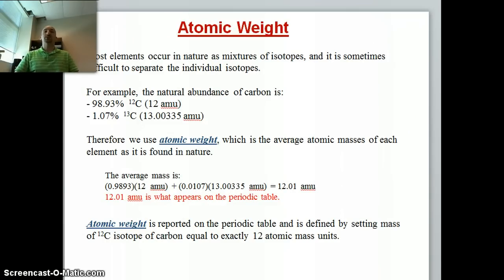Most elements that we encounter in nature exist as a mixture of isotopes. An example of this is carbon, which is 99% carbon 12 and about 1% carbon 13. The atomic weight is just the average atomic mass of each element in nature. For carbon, we can actually calculate this atomic weight using this equation where we know that 98.93% is atomic mass of 12. We can add that to what it is for carbon 13, and we find the average atomic weight for carbon.